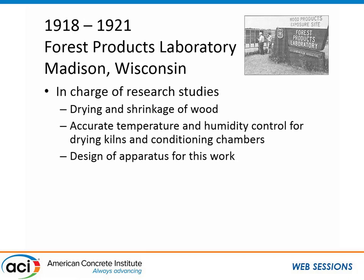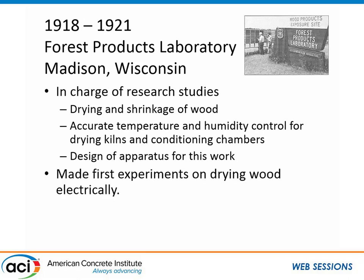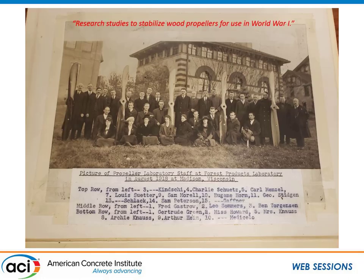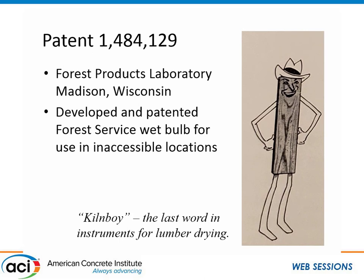What he really focused on was determining the moisture content of wood in kilns, and he did a lot of designing of apparatus to be able to test wood. He was one of the first to do experiments on drying wood with electricity. He was also involved with other people at the laboratory figuring out how to stabilize wood propellers for World War I. There's the group that worked on the propellers with Carl Menzel. While he was there, with another person, he submitted his first patent — for a wet bulb used in kilns or other inaccessible areas for determining the moisture content of wood products. This was later sold by the Foxboro Company.